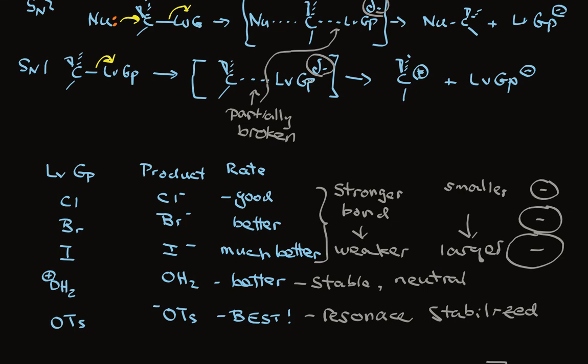Which explains the order we have observed down here, where all of these five leaving groups are reasonable leaving groups for SN1 and SN2 reactions. Their relative rates depend on the bond strengths and how readily these guys accommodate negative charge.